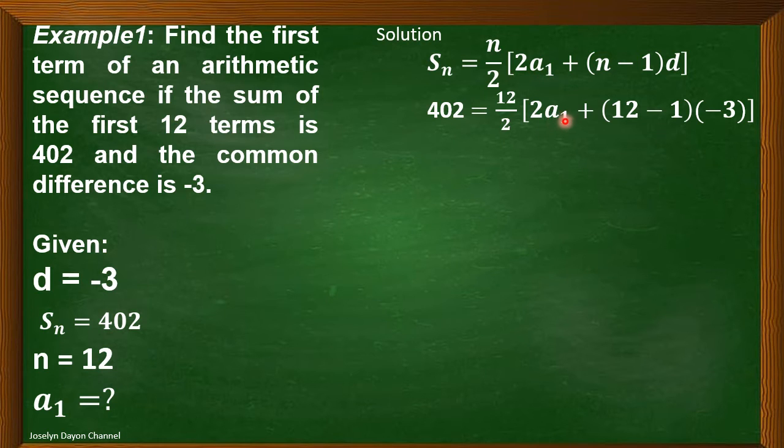Just copy 2 in the denominator part times the quantity of 2a sub 1. Then, a sub 1 is unknown, so we will just copy, plus quantity of n, n is 12, minus 1, and our d is negative 3.